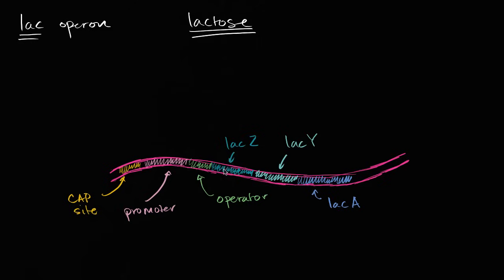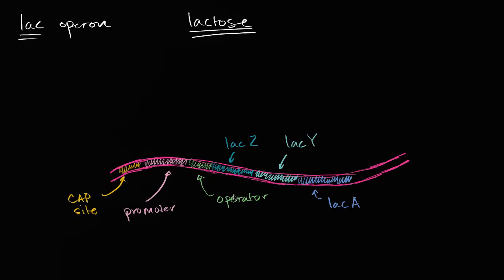For example, the lacZ gene codes for an enzyme that helps cleave lactose into simpler sugars. The lacY gene codes for an enzyme that allows for the absorption of lactose through cellular membranes. LacA is a little more interesting and less understood, but all three are involved in the metabolism and absorption of lactose.